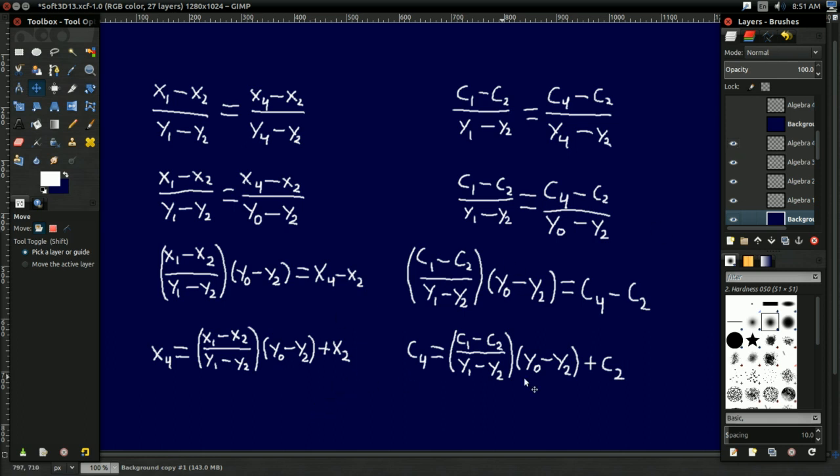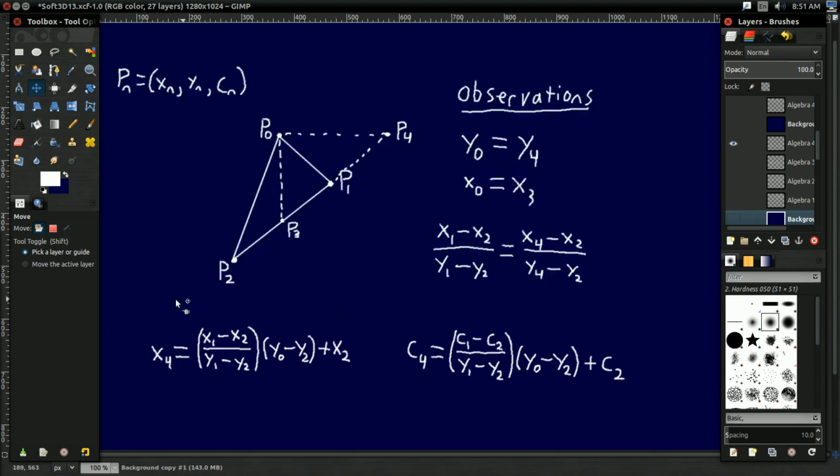And if you think about it, these equations really do make sense. So if I go back to our illustration here, X1 minus X2 over Y1 minus Y2, that's just the slope of this line. And if we multiply the slope of the line by, well, Y0 minus Y2, which is the Y of P0 and the Y of P2, so this Y distance. Then that's effectively moving us this far on X, moving us between P2 and P4. And all we have to do from there is add X2 to account for the initial offset of P2. And what do you know? That's the X location of P4. And same sort of equation applies for C4.